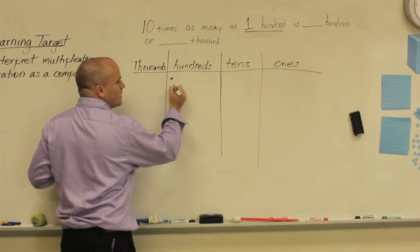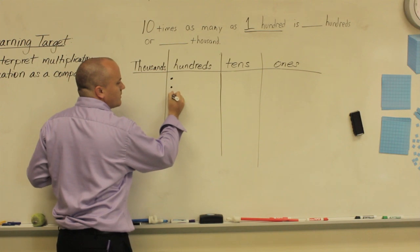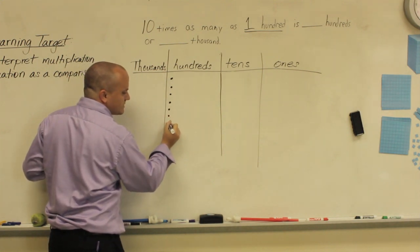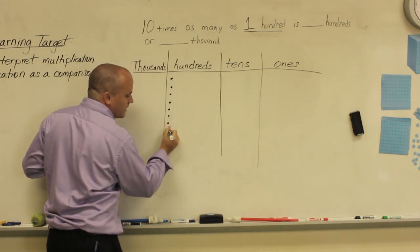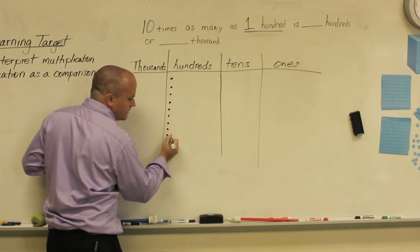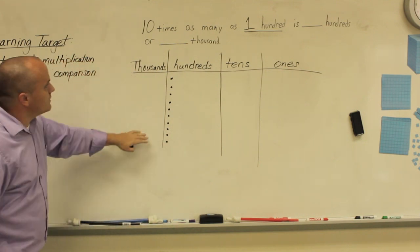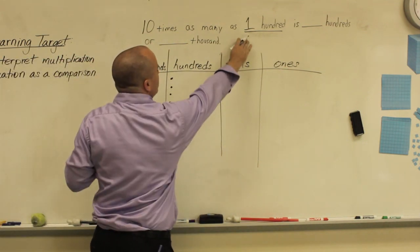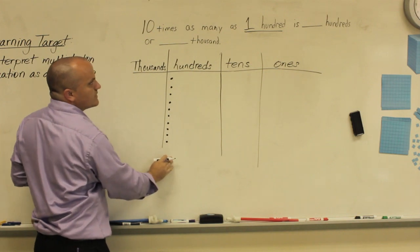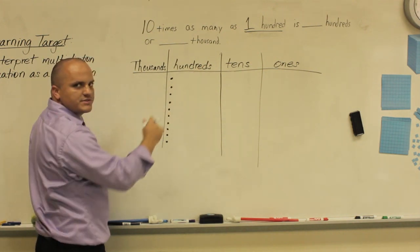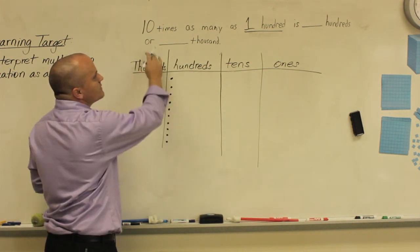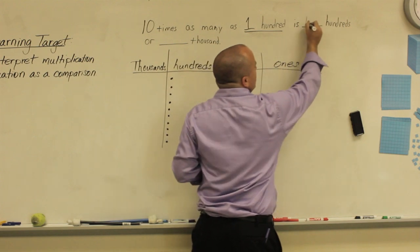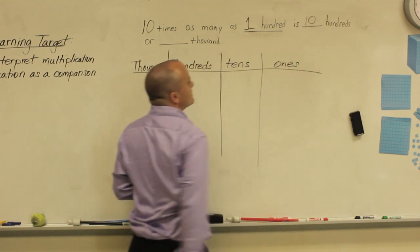So there's one, two, three, four, five, six, seven, eight, nine, ten. So now I have ten times one, and now I have ten hundreds. That answers my first blank: ten times as many as one hundred is ten hundreds.